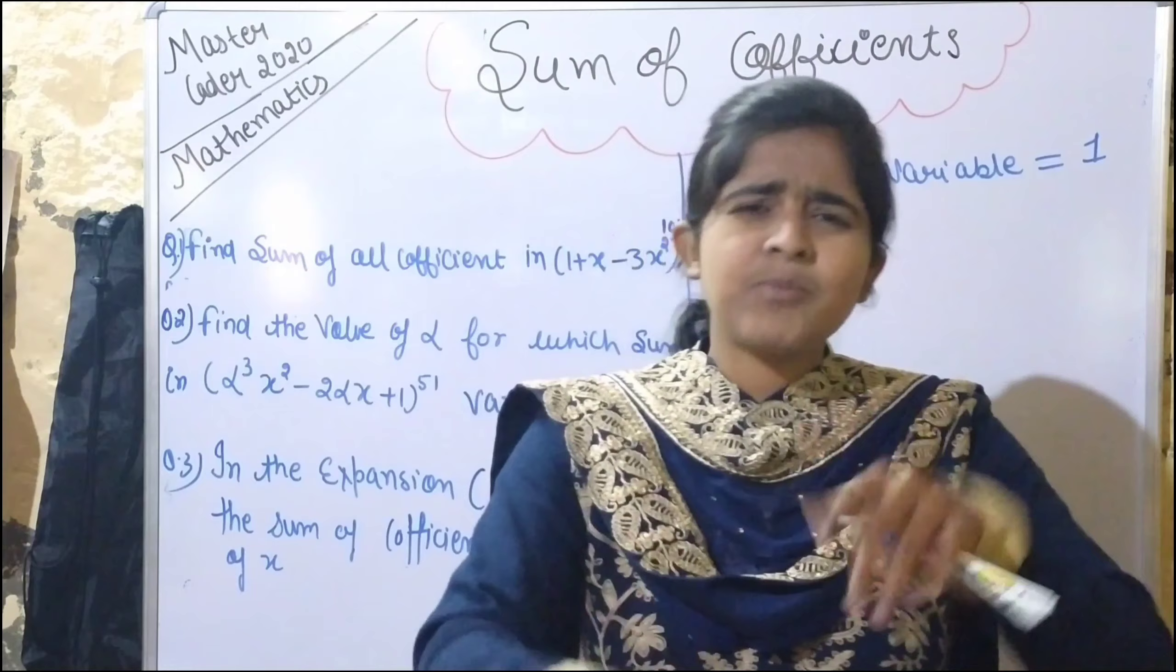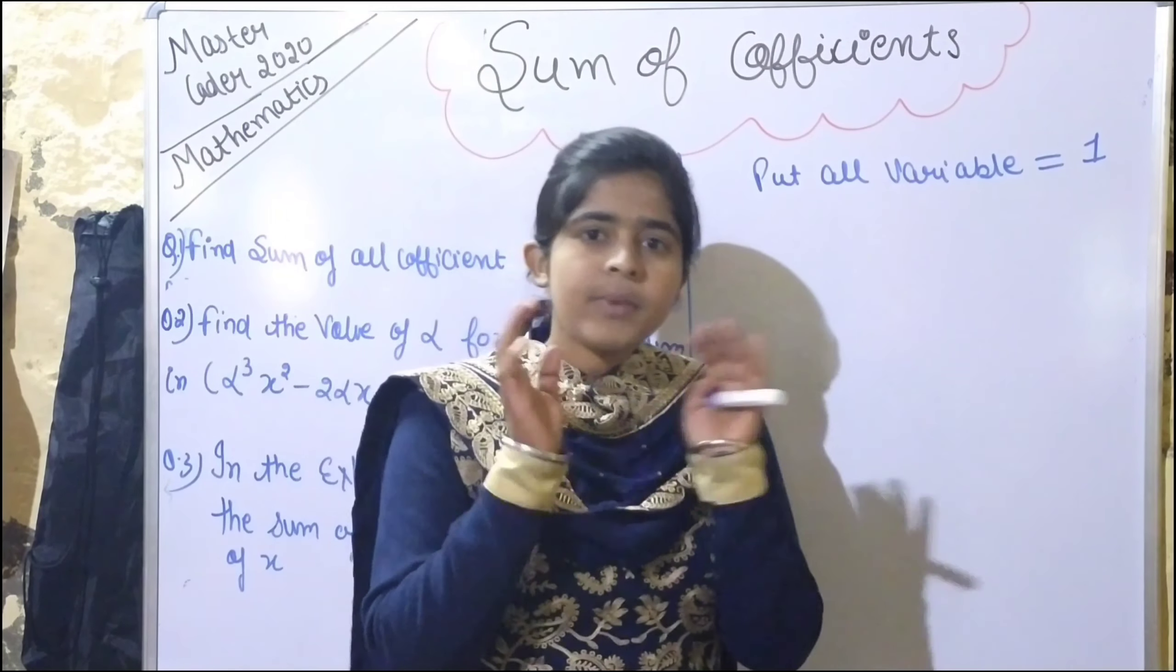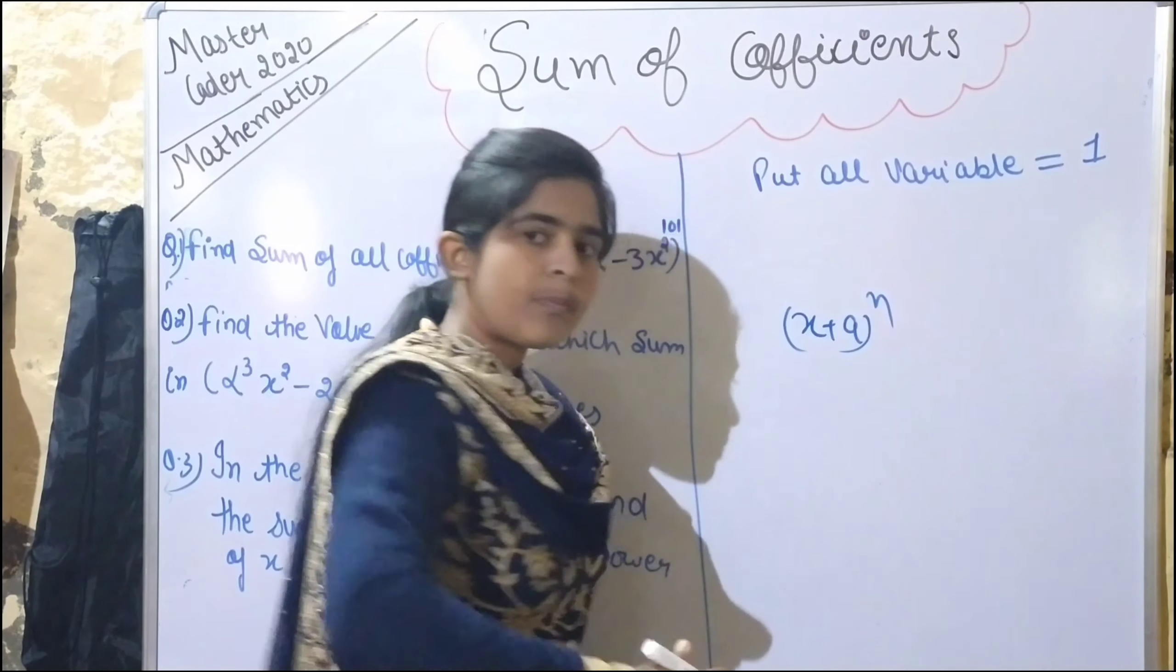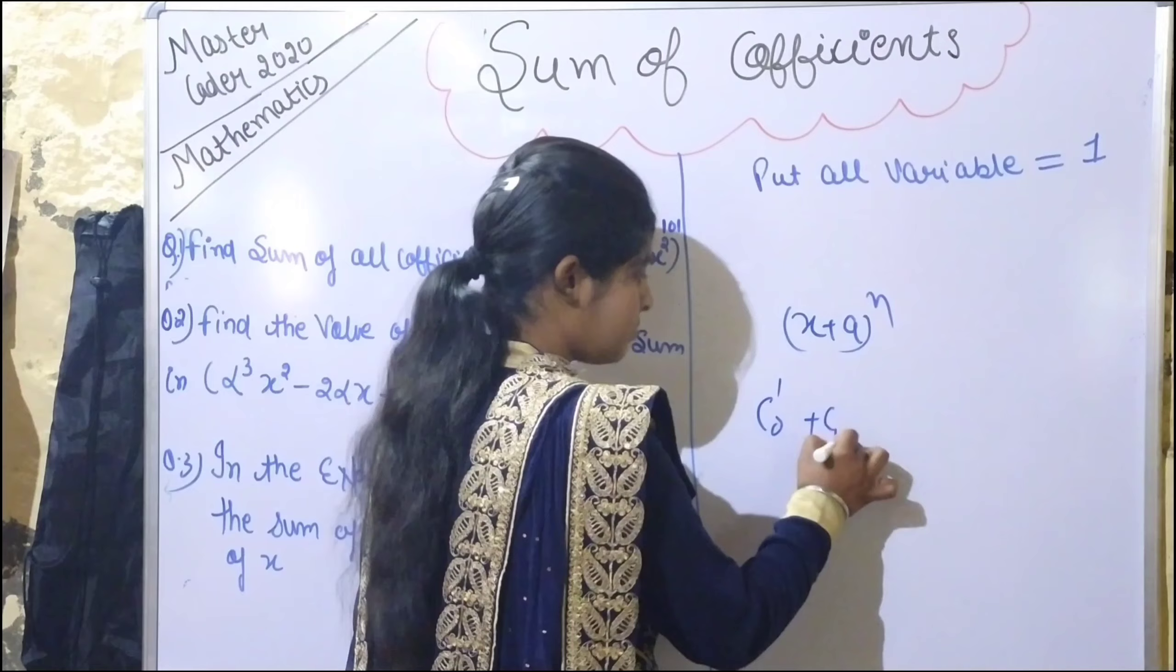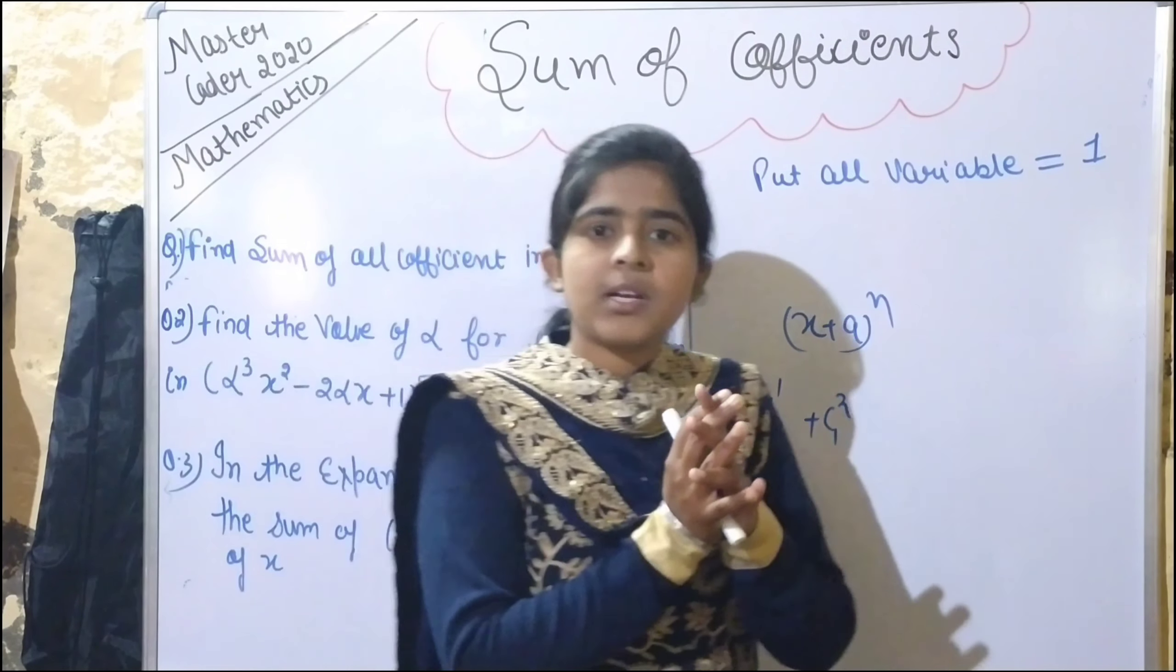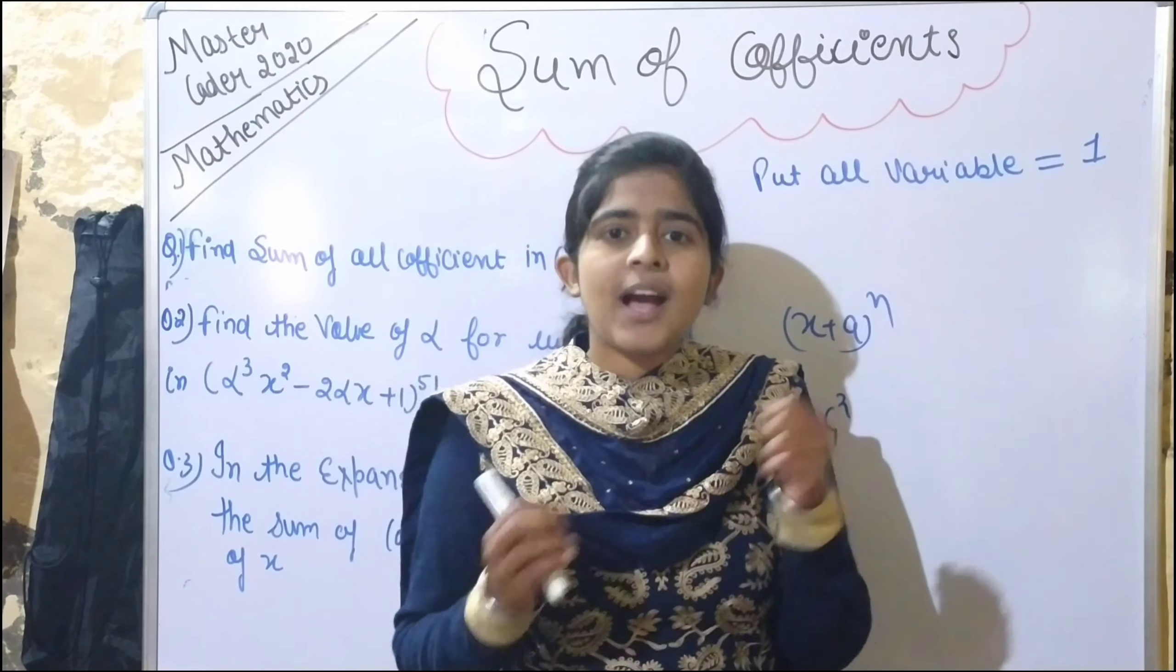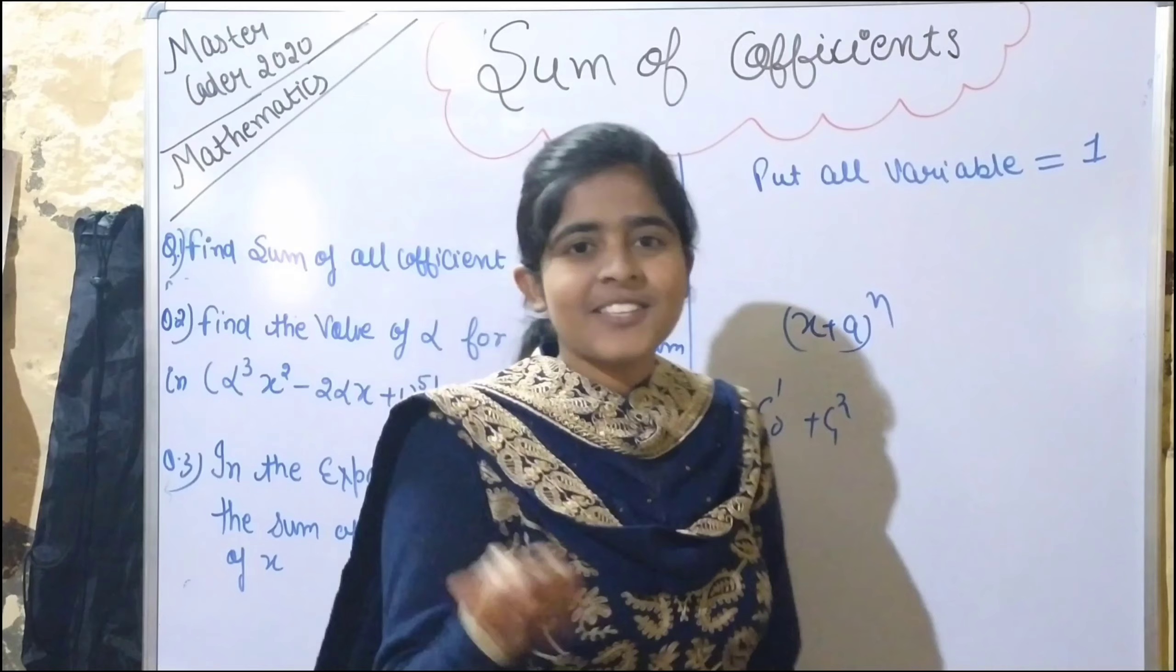Now we will move to the fifth part, and I'm sure it's very easy: sum of the coefficients. Like in binomial expansion, you have (x + a)^m. When you expand this, there are coefficients like C(n,0), C(n,1), C(n,2), and so on. To find the sum of those coefficients without expanding everything would normally be very difficult.